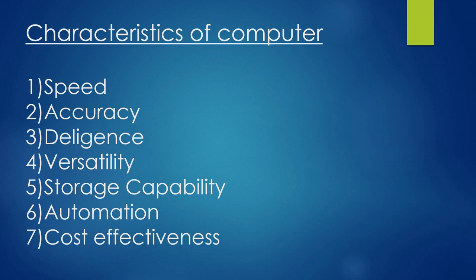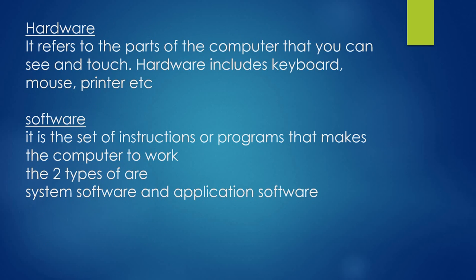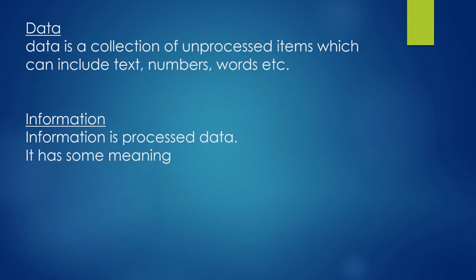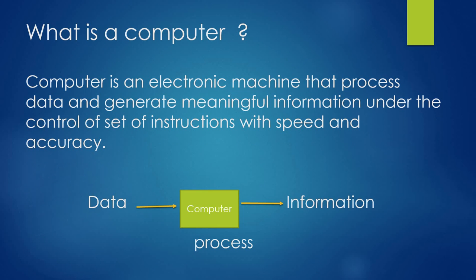To recap, the definition of a computer: a computer is an electronic machine that processes data and generates meaningful information under the control of a set of instructions with speed and accuracy. See you next time.